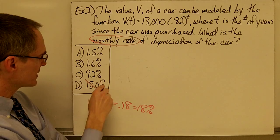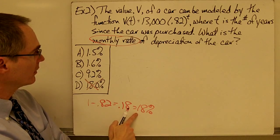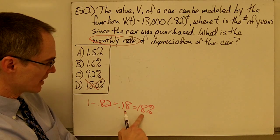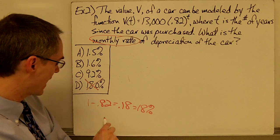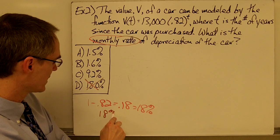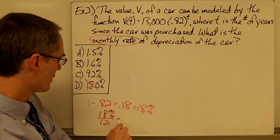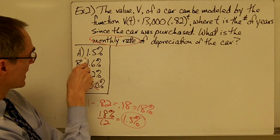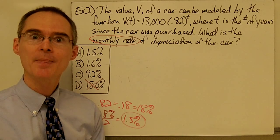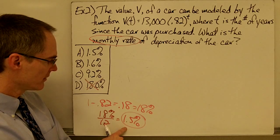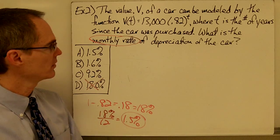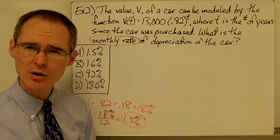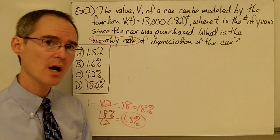I'm looking for the monthly rate of depreciation, not the annual rate. It's tempting — but wrong — to say that's the correct answer. Then it seems like all I need to do is divide 18% by 12, which gives 1.5%, pointing to answer choice A. Except that is also not the correct answer. You can't just divide by 12 to get 1.5%, even though that's exactly what we did in the previous compounding problem.